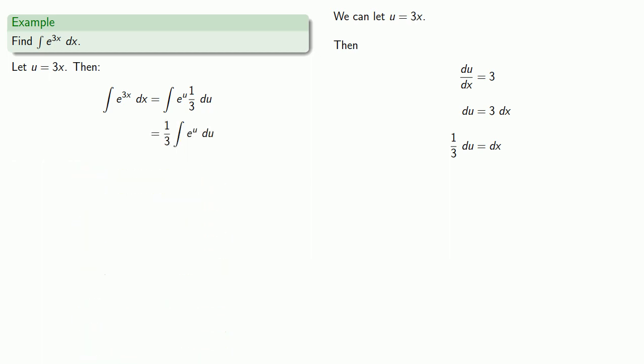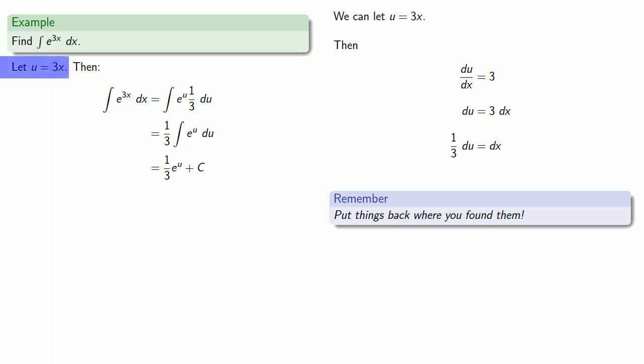And now I have to find the antiderivative of e to the u, which is the world's simplest antiderivative. It's just going to be e to the u, plus, don't forget, our constant. And finally, we apply the kindergarten rule, put everything back where we found it. And in this case, I substituted u equals 3x. I should put that back.